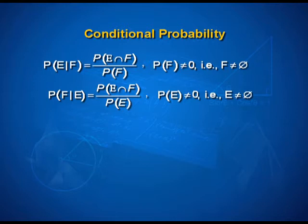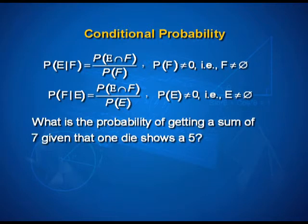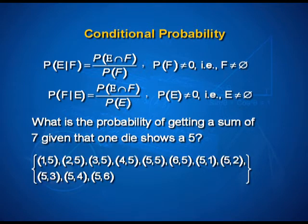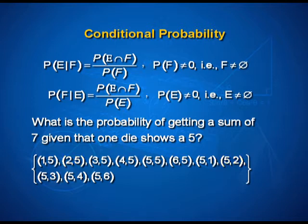In a situation like this — for example, what is the probability of getting a sum of 7 given that one die shows a 5 — if we know that one die shows a 5, then there are 11 possible outcomes. Out of these 11, there are 2 cases in which a sum of 7 is also satisfied. So these are the 2 possible outcomes in which both E and F conditions are being satisfied.